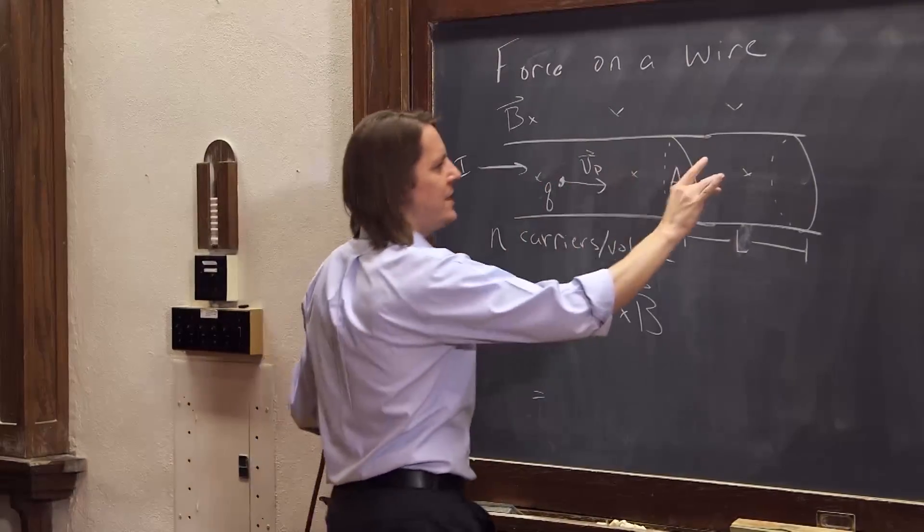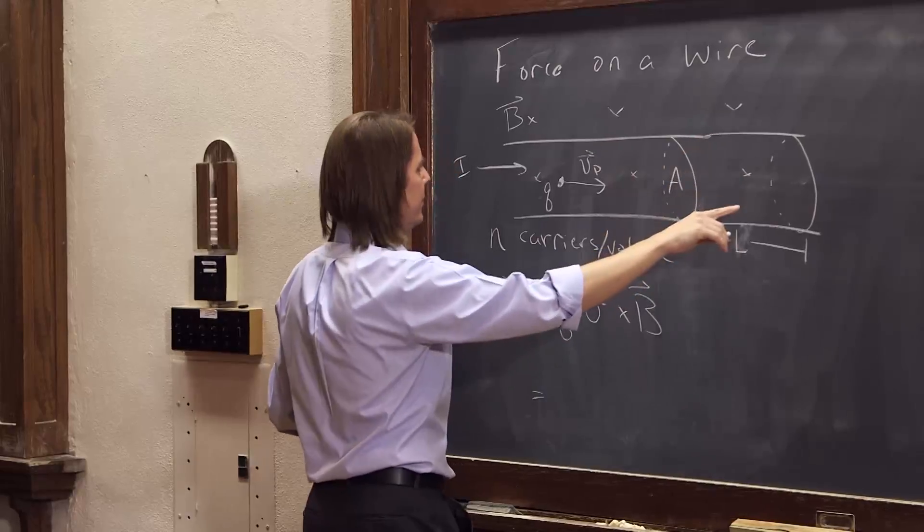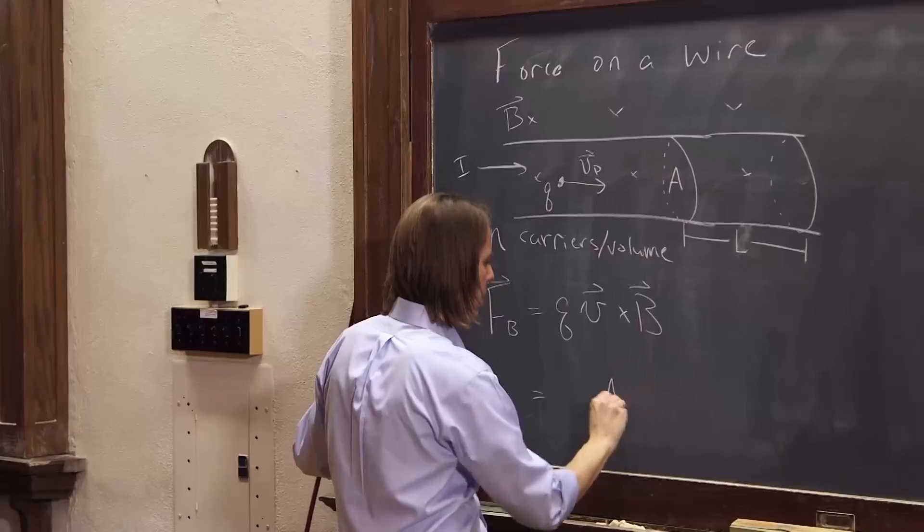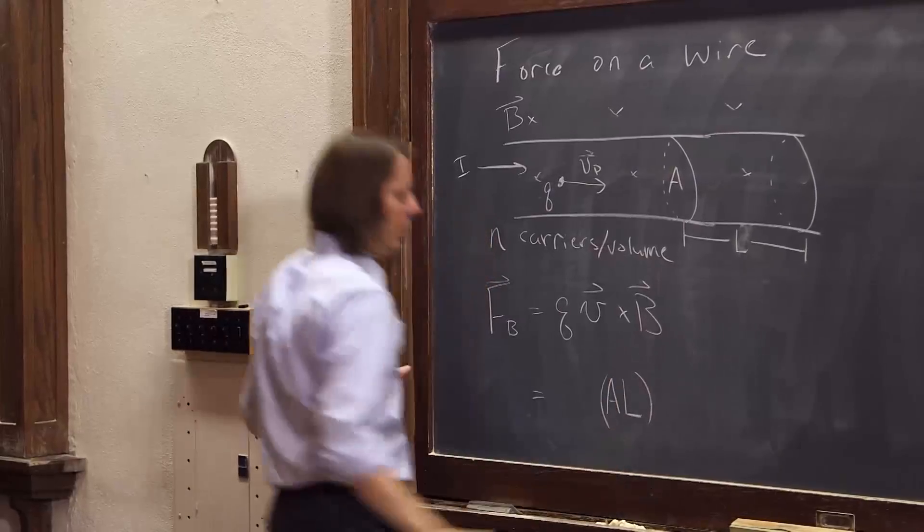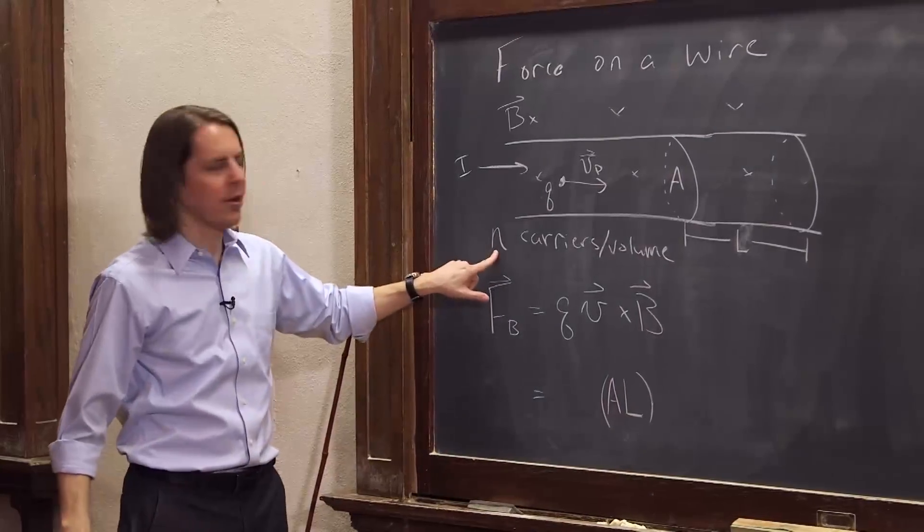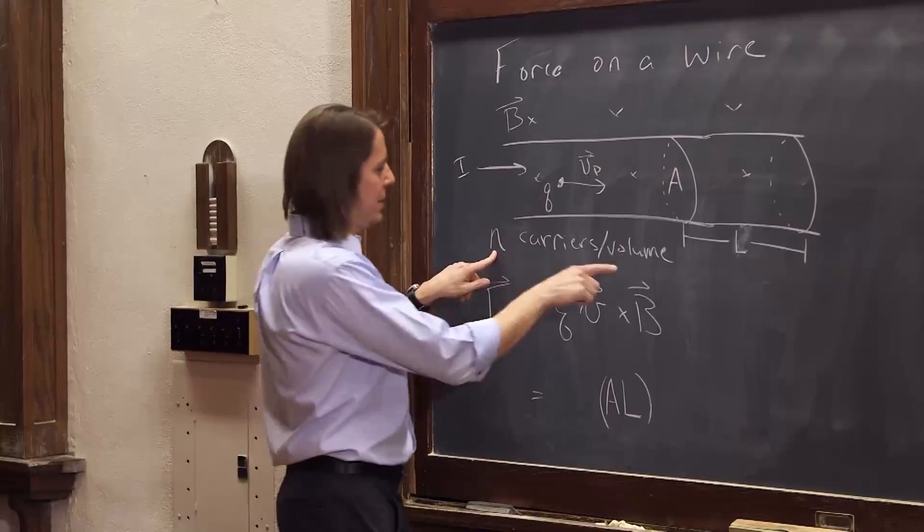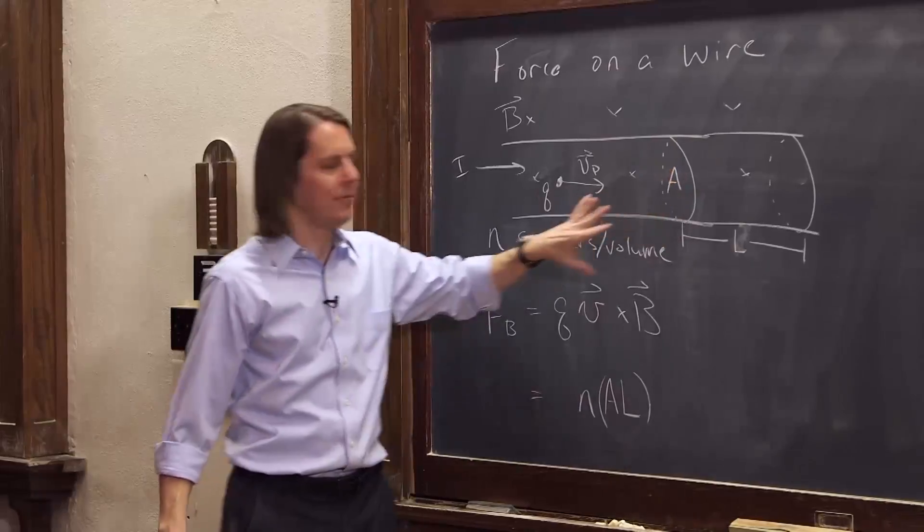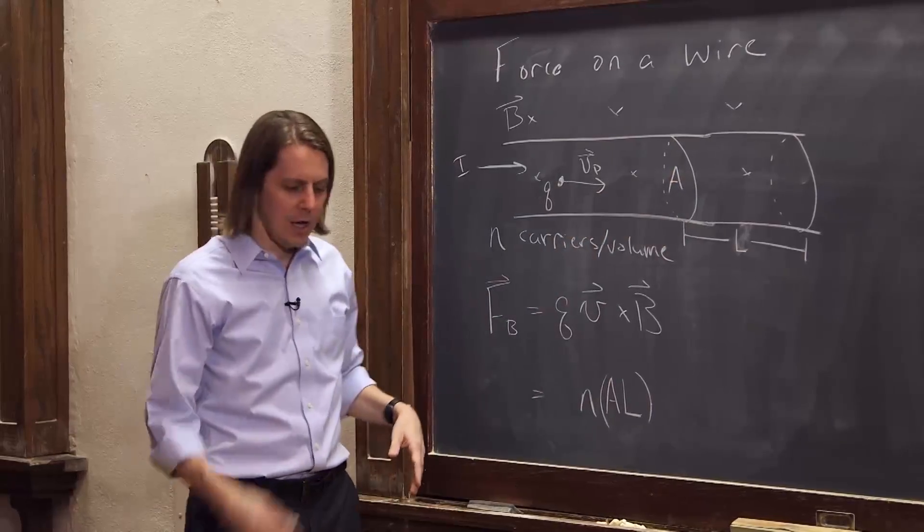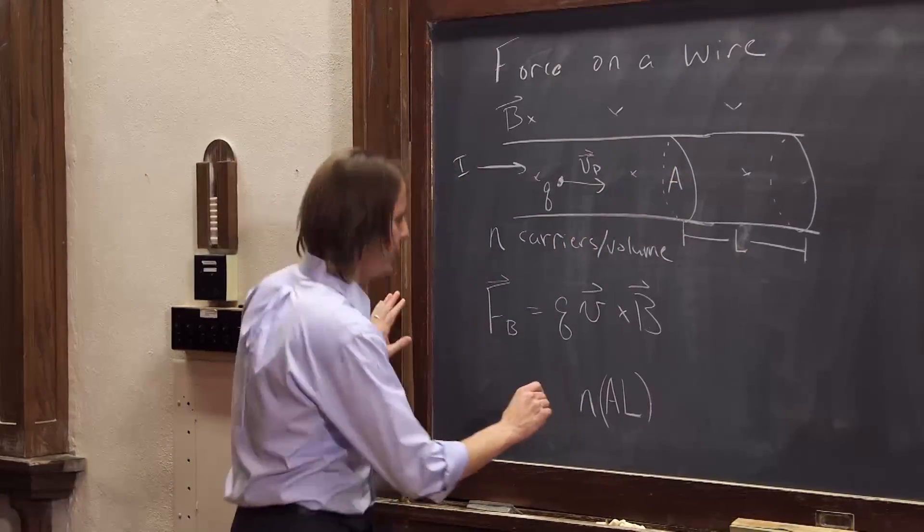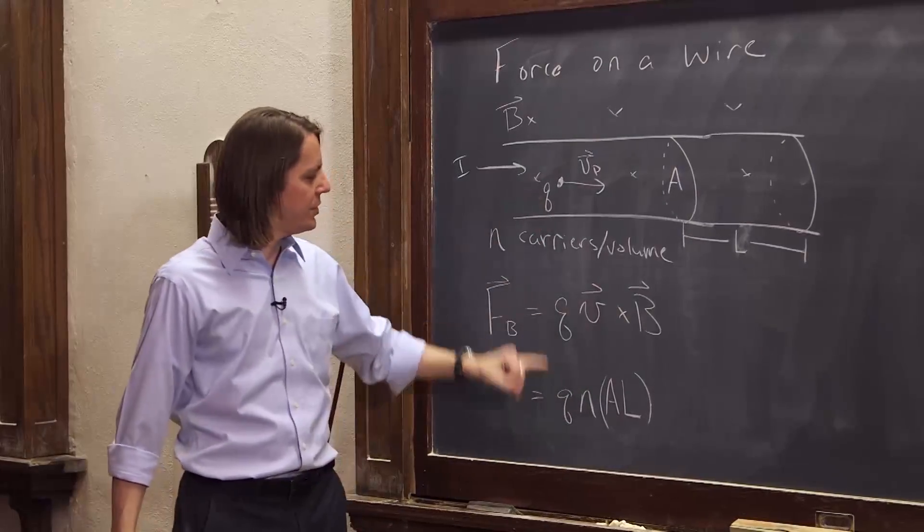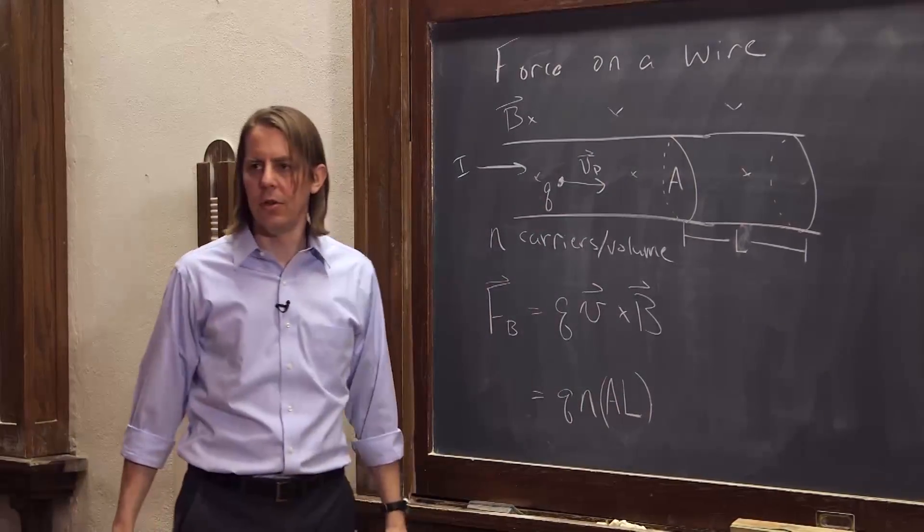So that volume is equal to A times L. Here's your volume. To get the number of carriers, you would multiply that volume times N. N is carriers per unit volume. You multiply it times the volume. That's the total number of carriers. And each one of them has a charge Q. So I put a Q here. So instead of just Q for a single charge, it's Q, N, A, L for all the charges.